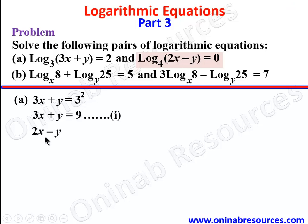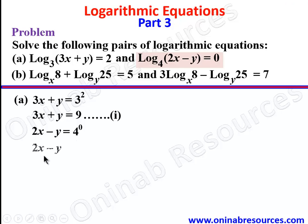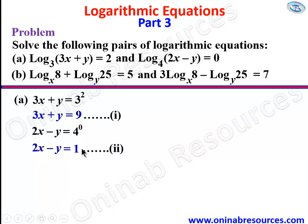We have 2x minus y is equal to 4 to the power of 0. Since any number to the power of 0 is 1, therefore we have 2x minus y is equal to 1. We call this equation 2. We now consider equations 1 and 2.